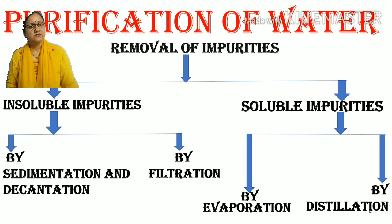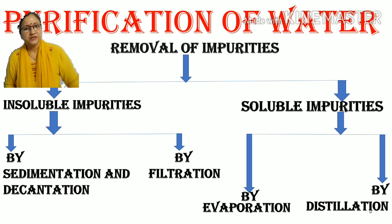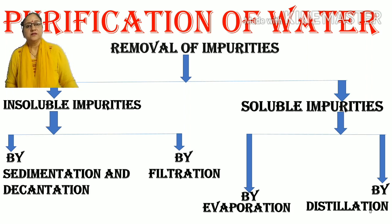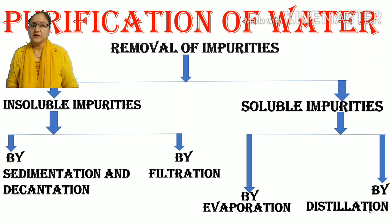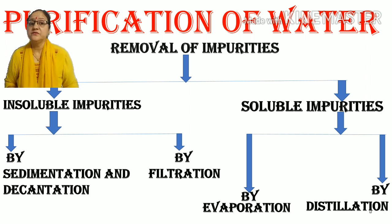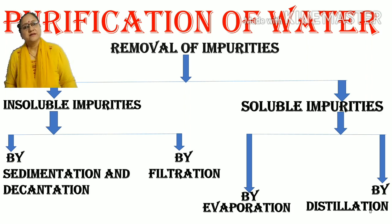Filtration uses filter paper to remove insoluble impurities from the water. The water that comes down through the filter paper is known as filtrate, and the insoluble impurities that remain above the filter paper are known as residue.